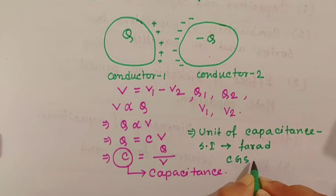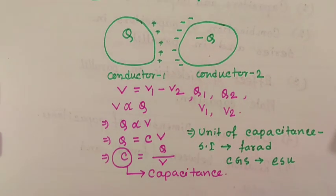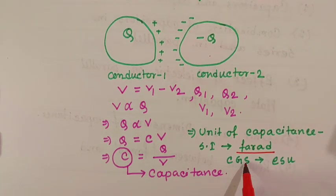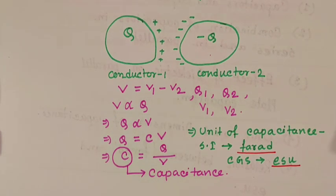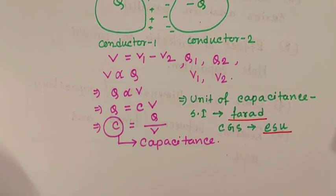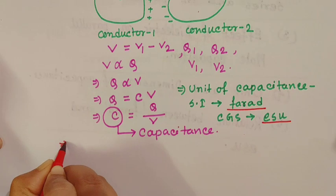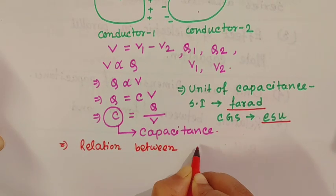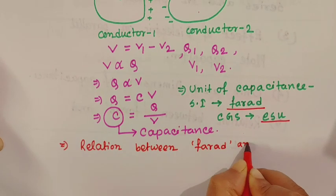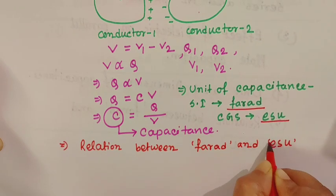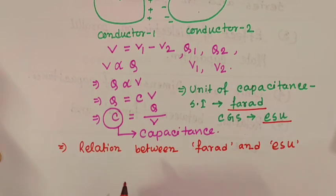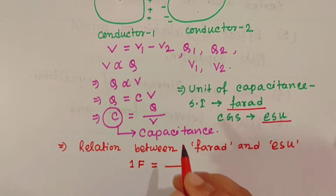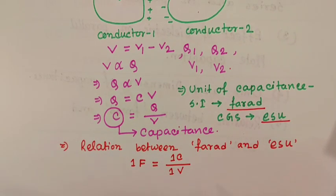Now what is the relation between Farad and ESU? We are going to calculate these things. 1 Farad equals 1 Coulomb divided by 1 Volt. Now, 1 Coulomb equals 3 × 10⁹ ESU. And 1 Volt equals 1/300 ESU.